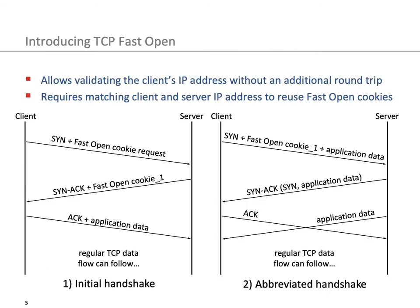The TCP fast open protocol has two handshake modes: the initial handshake and the abbreviated handshake. During the initial handshake, the client starts by sending a SYN package along with a fast open cookie request. The server then responds with a SYN-ACK and attaches a fast open cookie to this message. Finally, the client sends an ACK and starts sending application data.